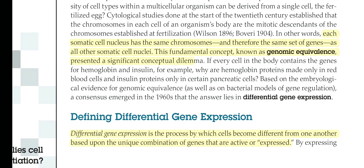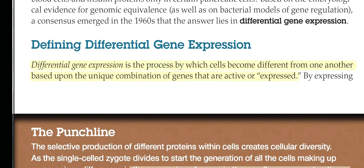It is based on their differential genomic expression. Differential gene expression is the process by which cells become different from one another, based on the unique combination of different genes of the genome that are expressed in a particular time interval, and the amount of concentration they can produce. All these things together regulate and lead to different kinds of cell type production. So differential gene expression is the process by which cells become differentiated based upon the unique combination of genes that are active or expressed.